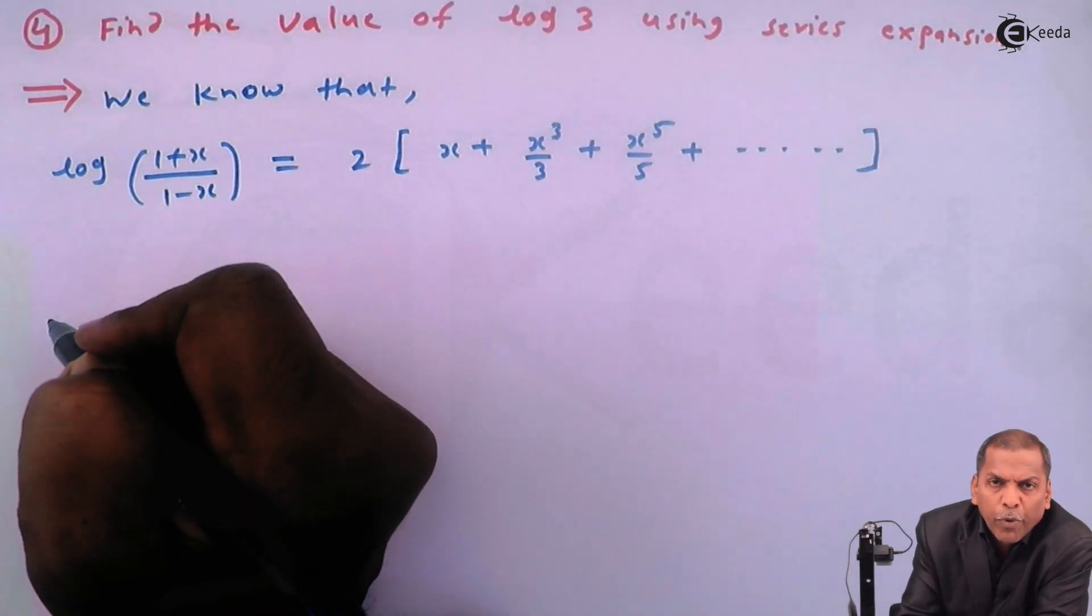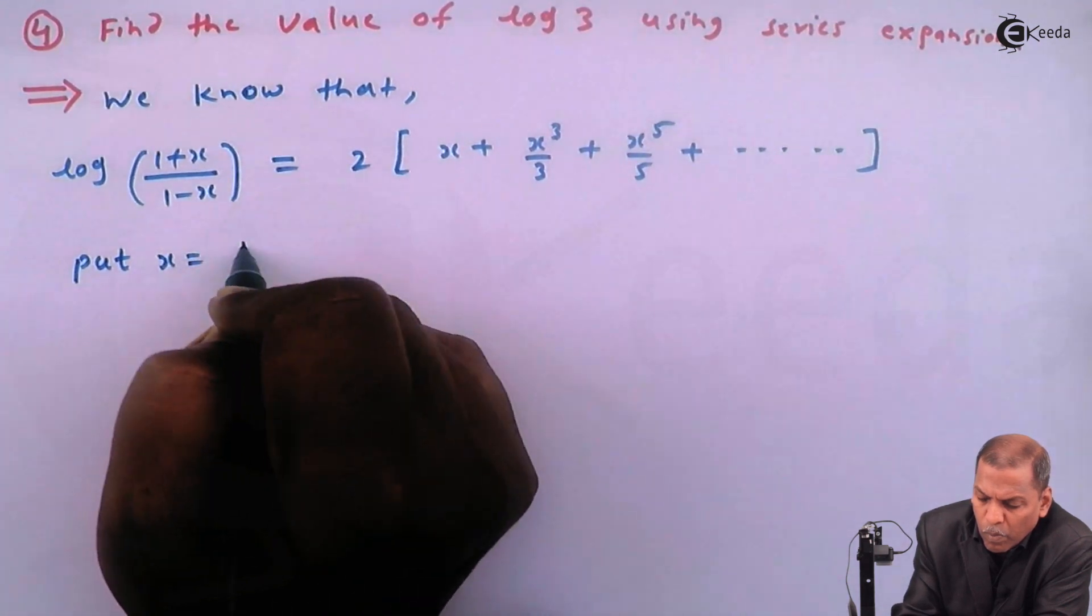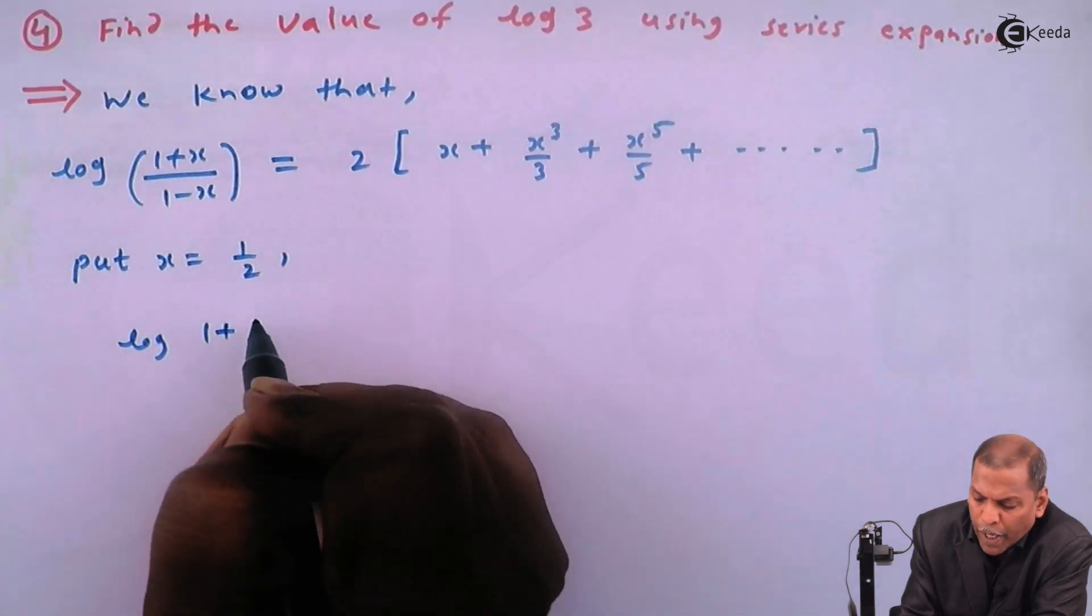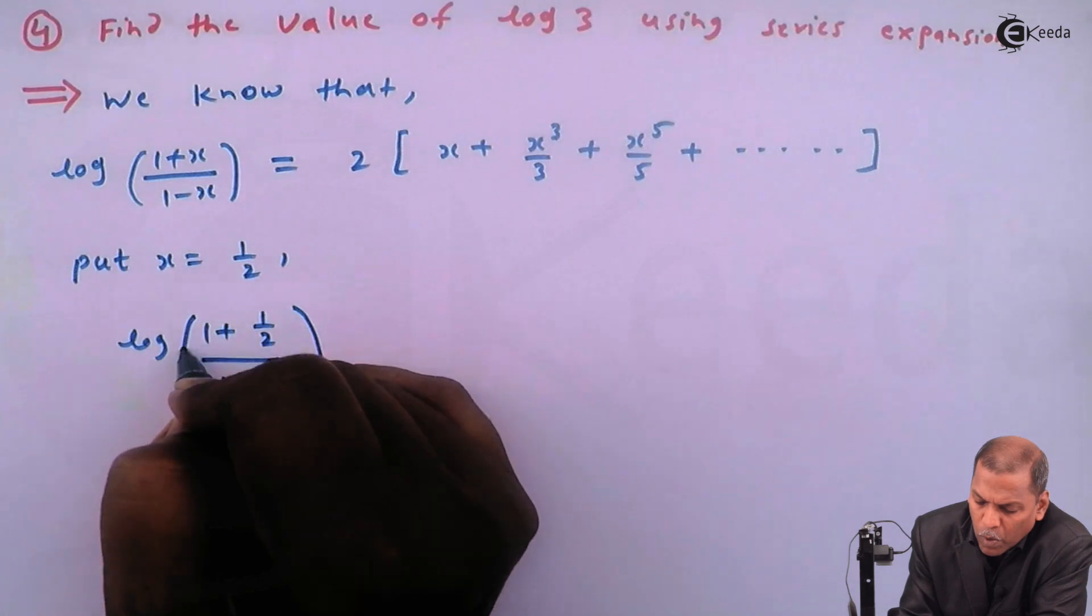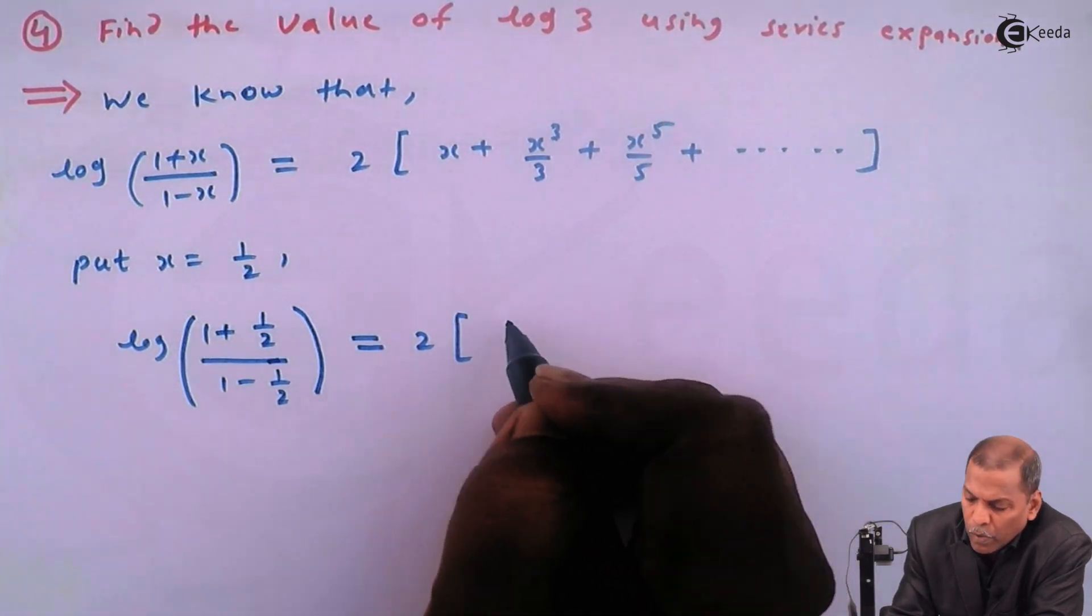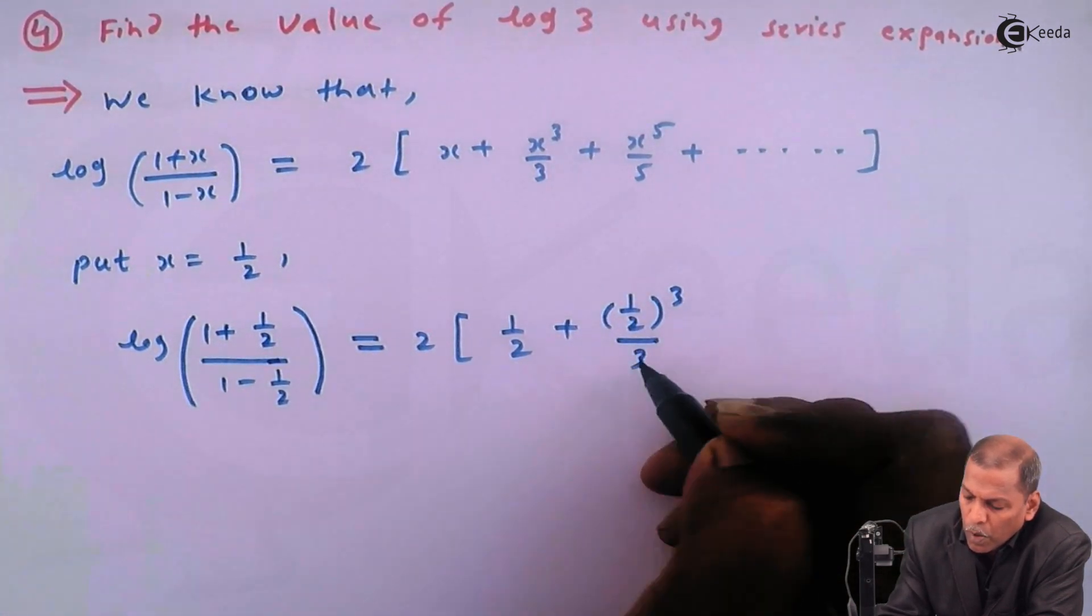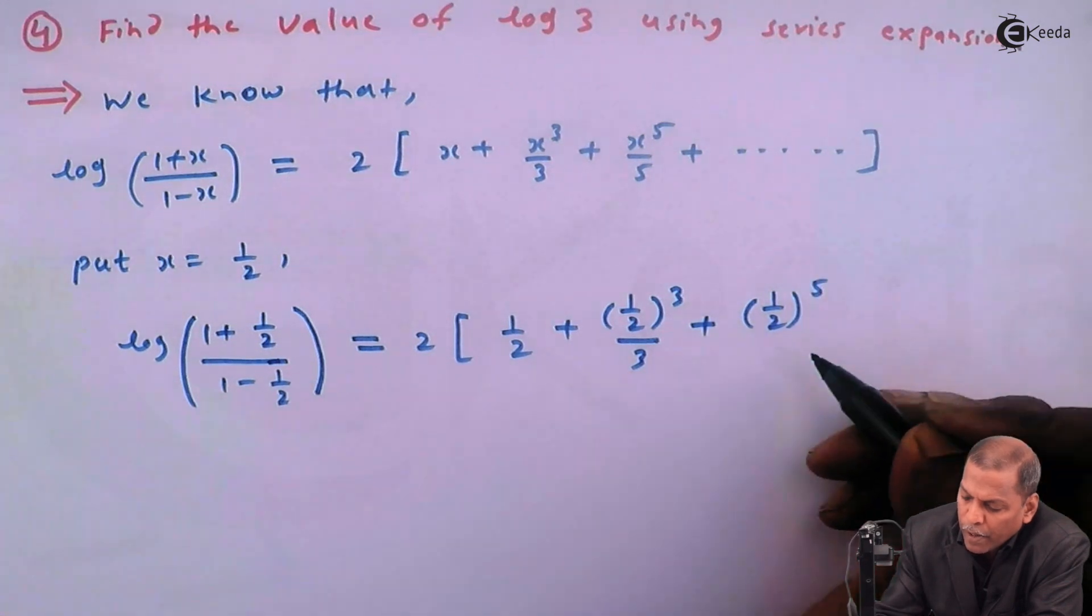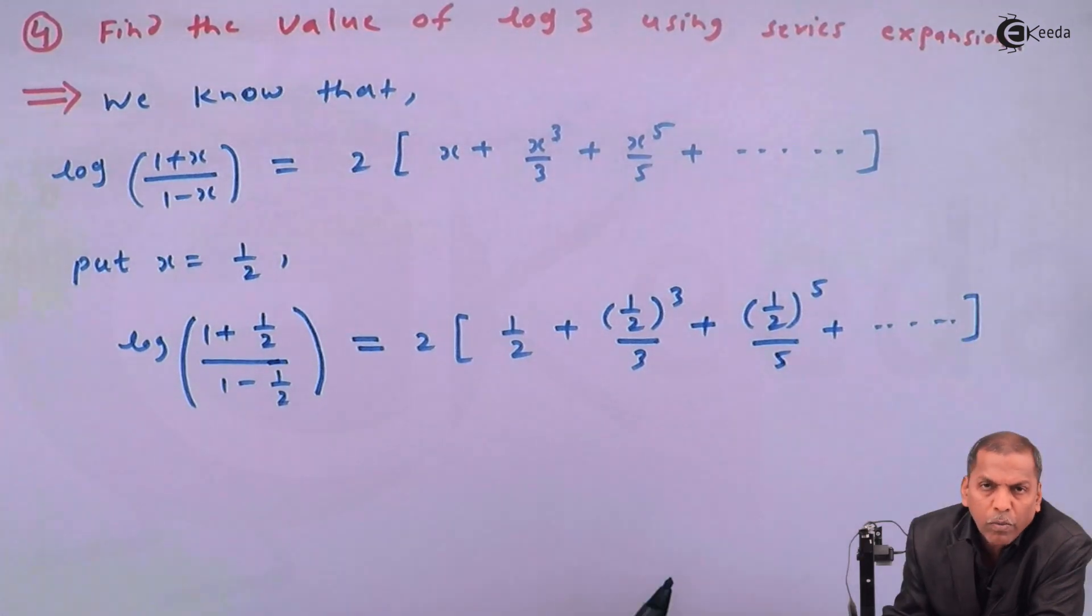In this formula we put x = 1/2. We get: log((1 + 1/2)/(1 - 1/2)) = 2[1/2 + (1/2)³/3 + (1/2)⁵/5 + ...]